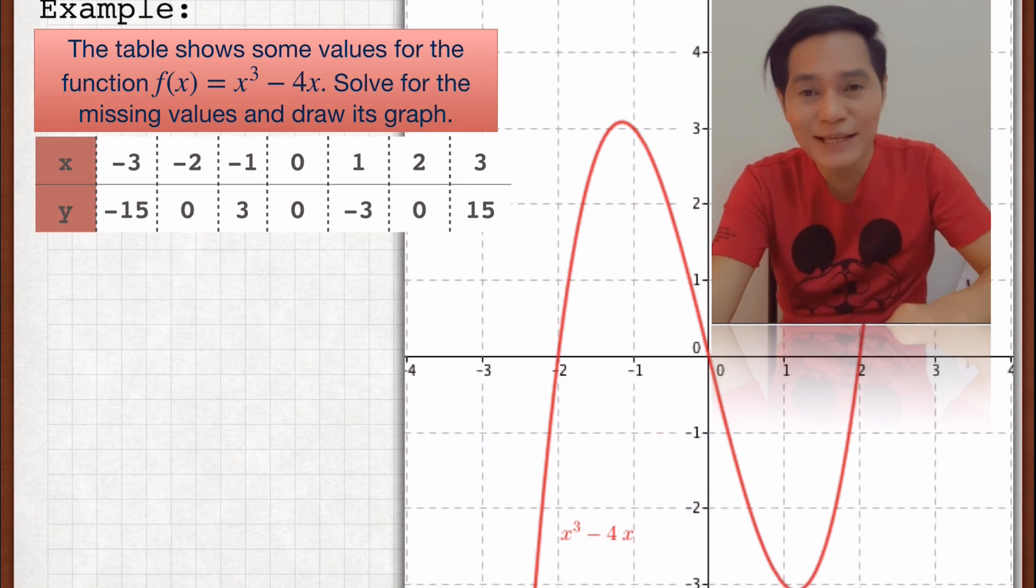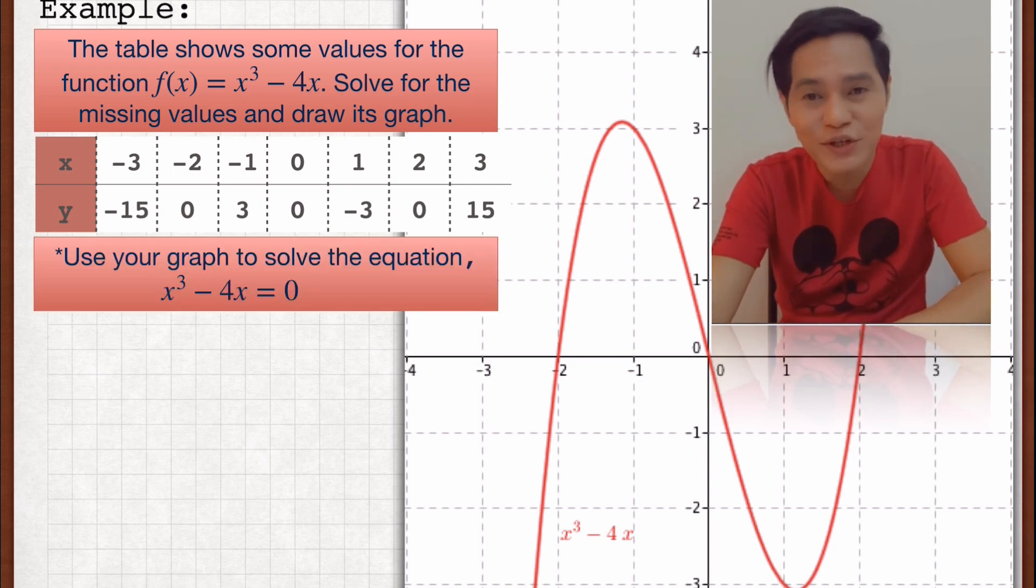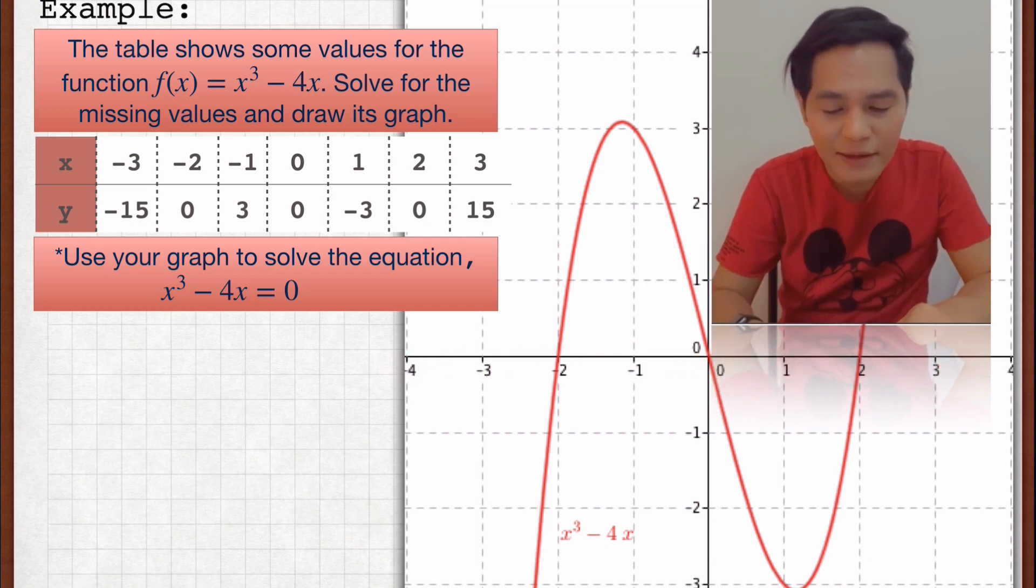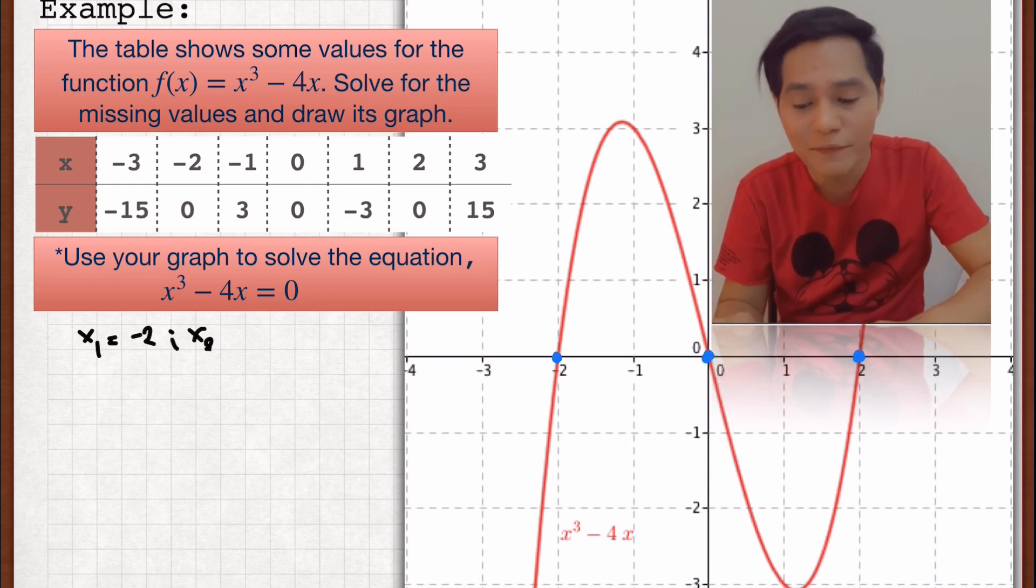Wait, there is more. I have here the last question about the graph of a cubic function which is use your graph to solve the equation x³ - 4x = 0. How are we going to answer this question? Just simply look at the graph here and check where it intersects the x-axis. So there you go. You have here at -2, 0, and positive 2. So therefore, these are the solutions of the given equation.